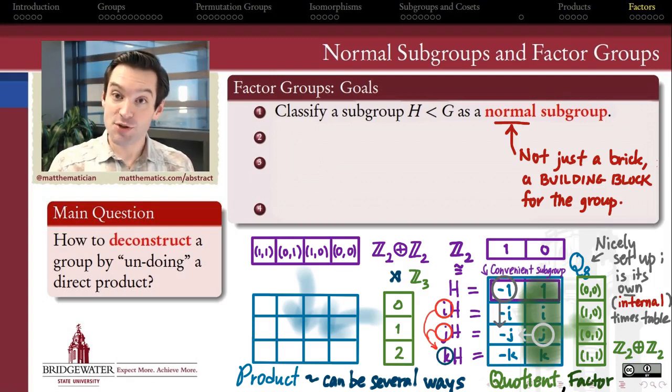We're going to think of them as not just a brick in my wall that makes my group, but we want those bricks to be the cornerstone, the building blocks, the things on which the larger group are actually built. So what's that going to take? That's the first question we need to answer. What kinds of subgroups get to play this kind of role?